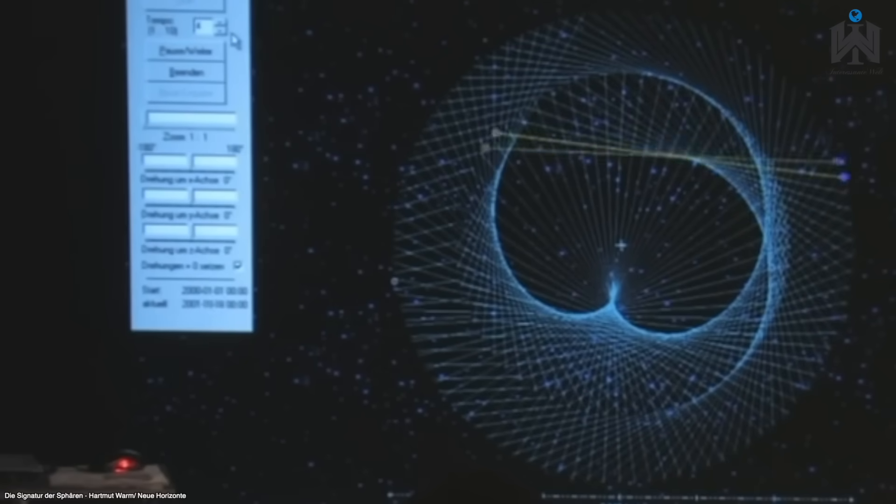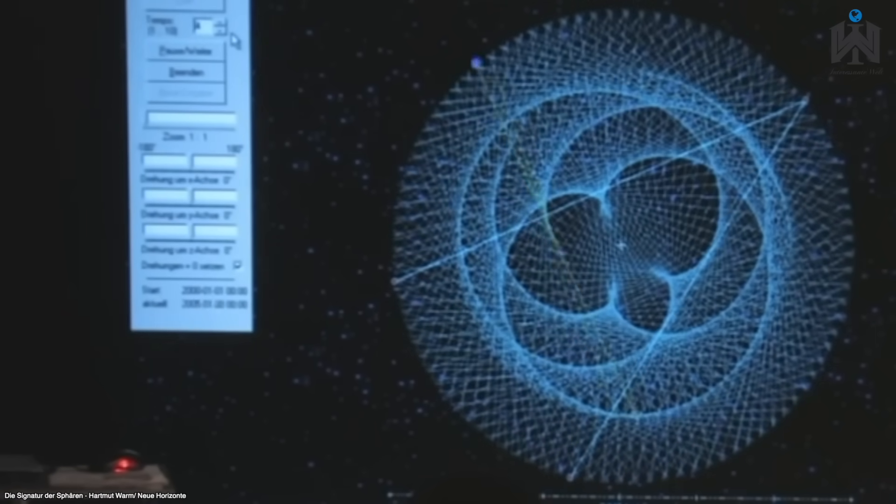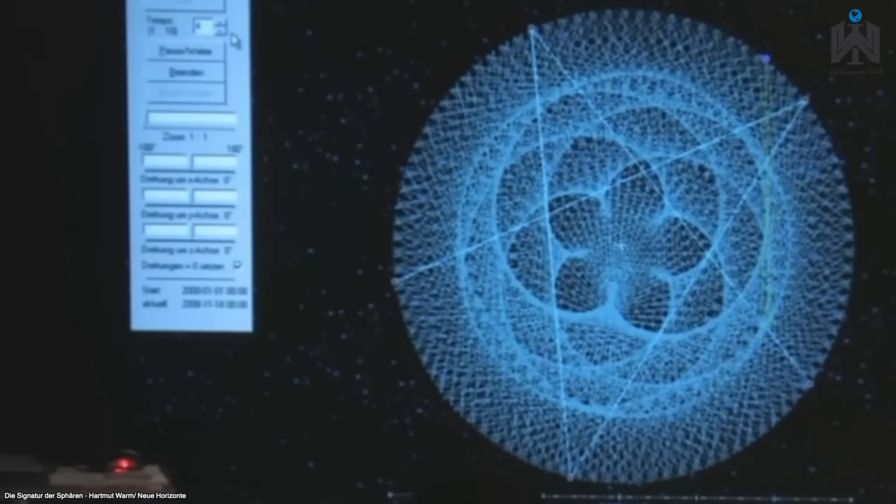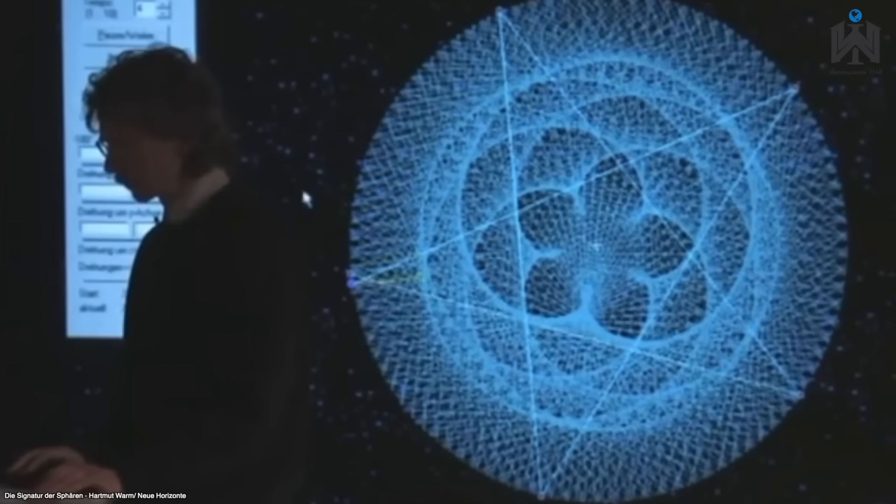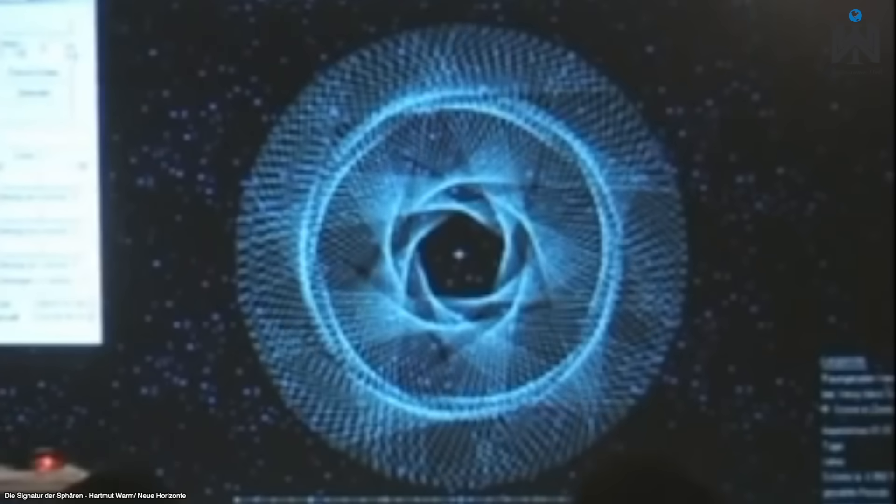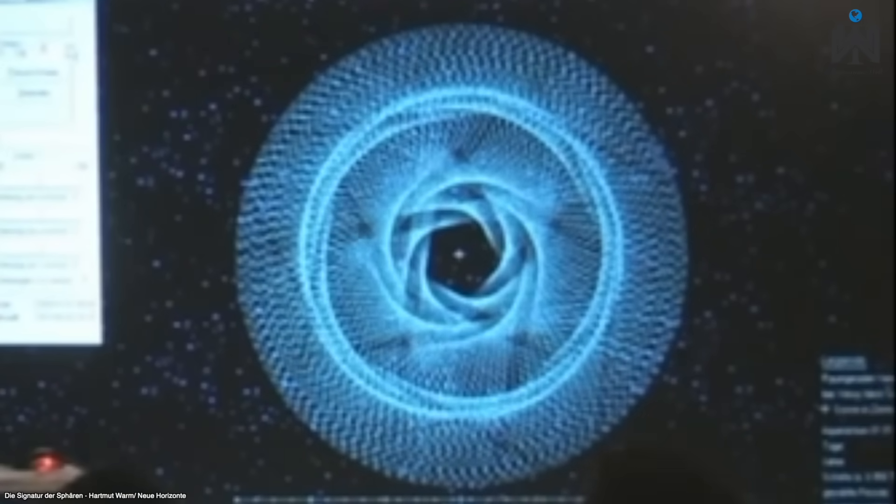Weiterhin zeichnet er alle paar Tage sozusagen eine Gerade zwischen den beiden Planeten. Schaut, welch ein Muster durch dieses Vorgehen entsteht. Dieses Muster entsteht, wenn er eine Verbindungslinie zwischen Venus und Erde zieht, jedes Mal wenn ein Venus-Tag vergeht, also in 117 Tagen.